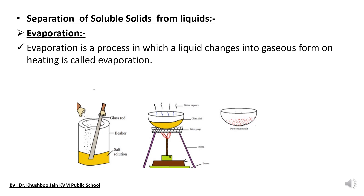Miscible solutions are those solutions in which the compound added to the liquid is completely dissolved in the liquid and we cannot recognize or differentiate the solute and the solvent. This type of solution is known as a miscible solution.